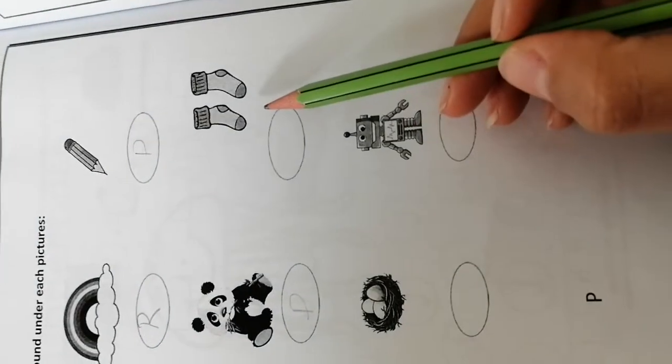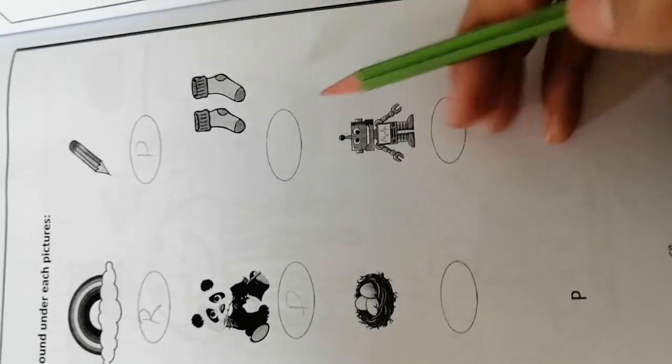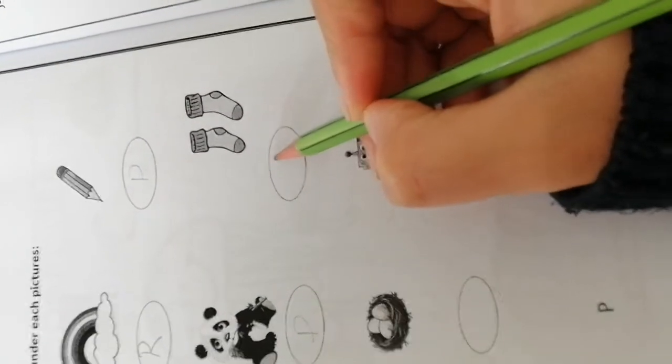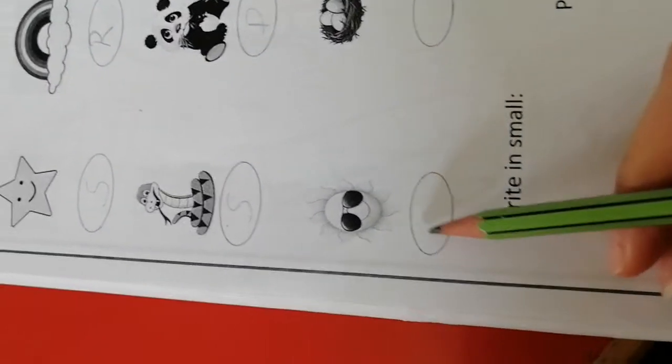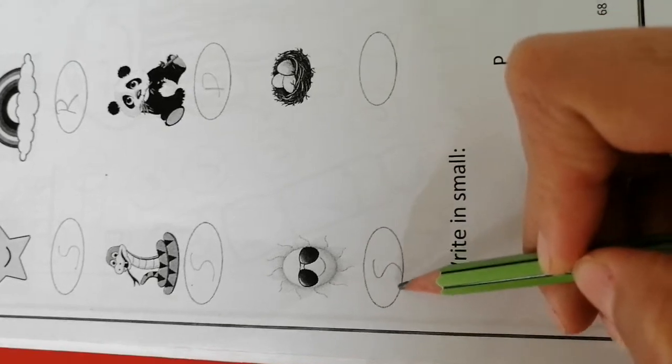And what is this? Socks. Sound S. What is this? Sun. Sun. Sound S.